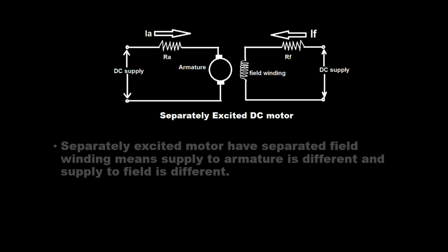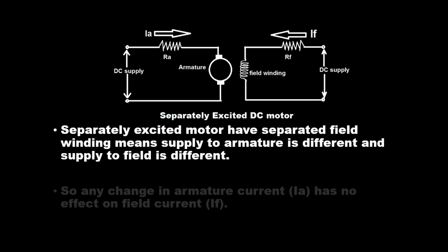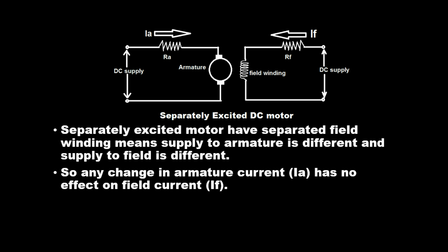The separately excited motor has separated field winding, meaning the supply to the armature is different and the supply to the field is different. So any change in armature current has no effect on field current.